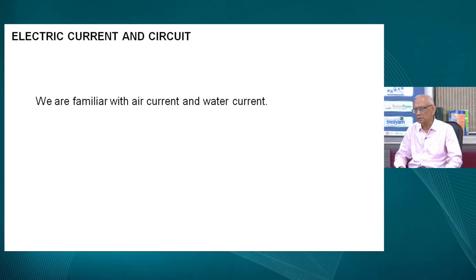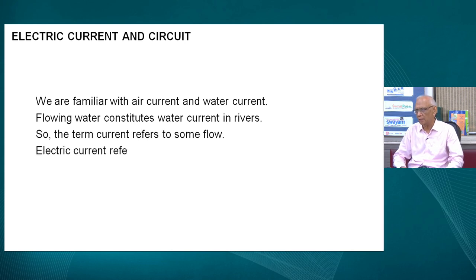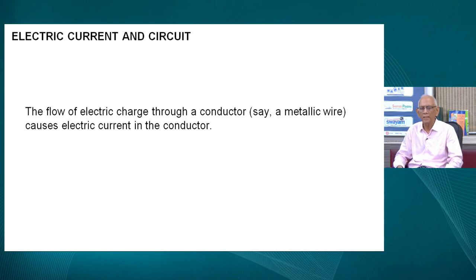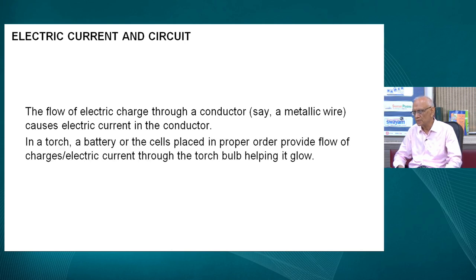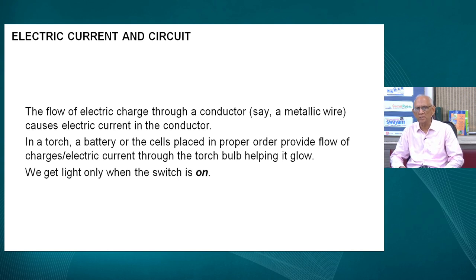Current — we are familiar with this term like air current, water current. Current refers to some sort of flow. In our context of electric current, the electric current refers to the flow of electric charge. The electric charge in electric circuits is made to pass through metallic wires and it causes a number of effects like heating effect, mechanical effect, etc. In a torch or battery, cells placed in proper order provide flow of charges which help a torch lamp to glow. We get light only when the switch is in the on position.